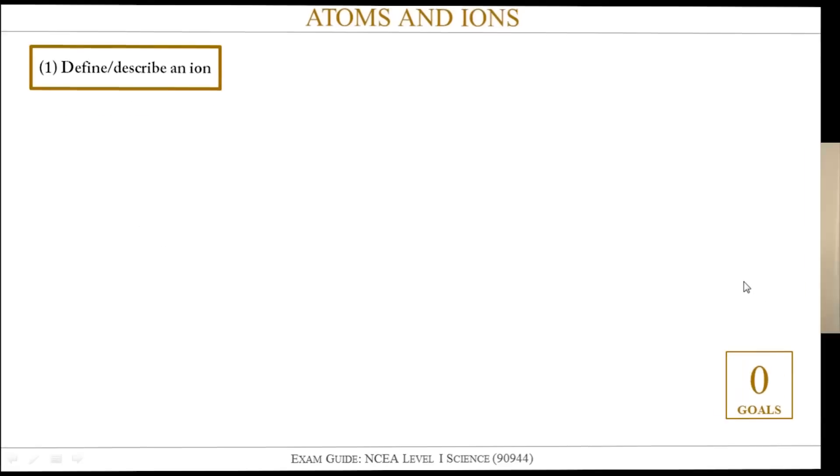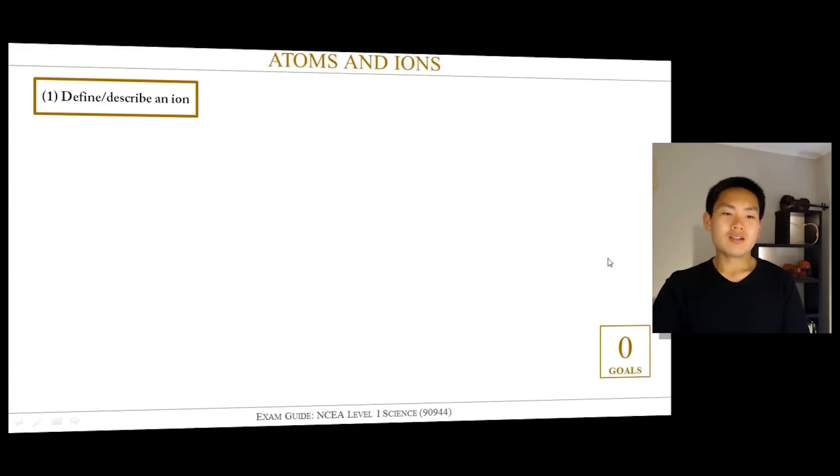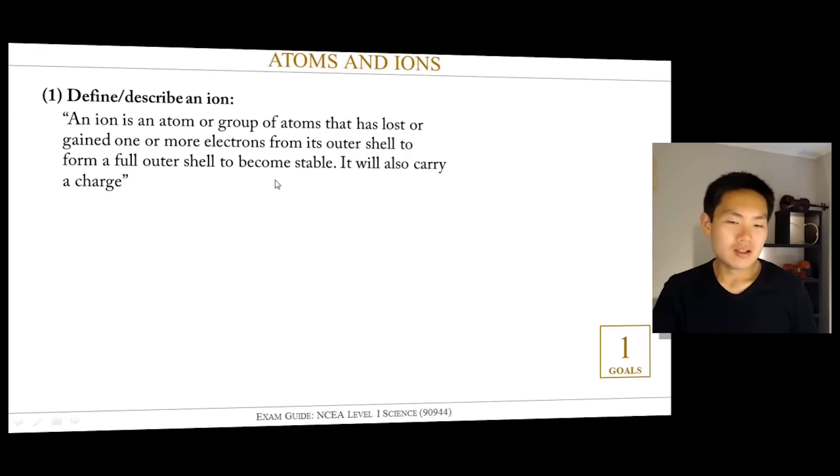So the first step to answering this question is to define or describe what an ion is. The way to do that is to learn a definition. I've got: an ion is an atom or group of atoms that have lost or gained one or more electrons from its outer shell to form a full outer shell and to become stable. They'll also carry a charge. This is taken straight from the assessment marking criteria from one of the past exam papers.